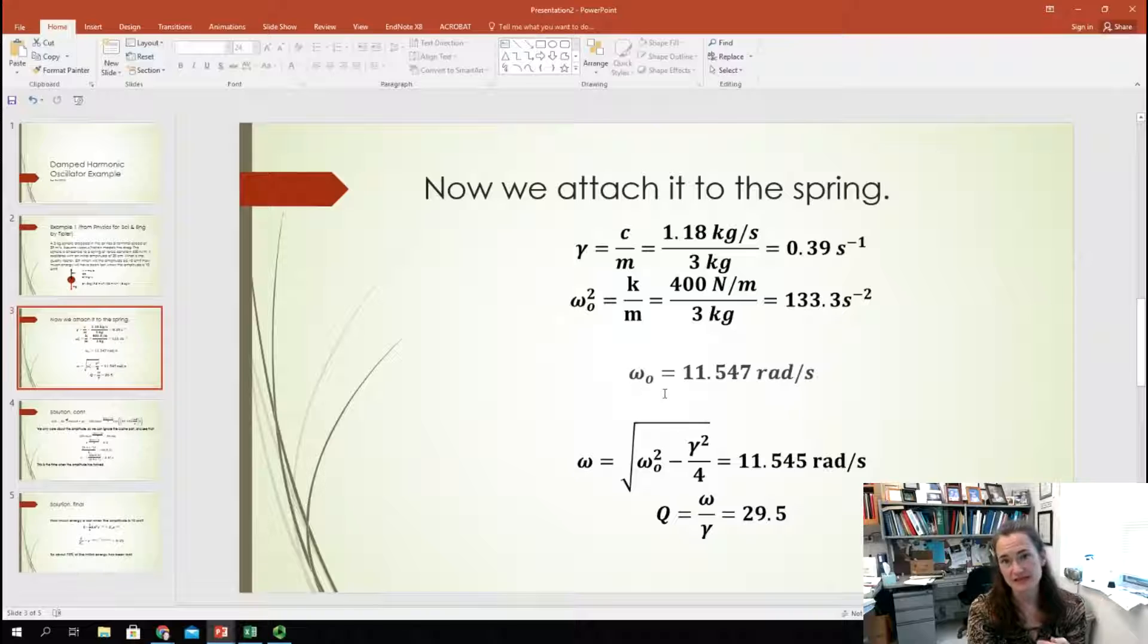Okay? Now, that would be the frequency in the absence of damping. What is it with damping? Okay? So, that expression is omega is equal to the square root of the natural frequency squared minus gamma squared over 4. Okay? So, plugging that in, I end up with a frequency for damped oscillations of 11.545 radians per second. So, notice here that omega and omega_naught are very, very close. It doesn't shift the frequency too much, in other words, to have that damping in there.